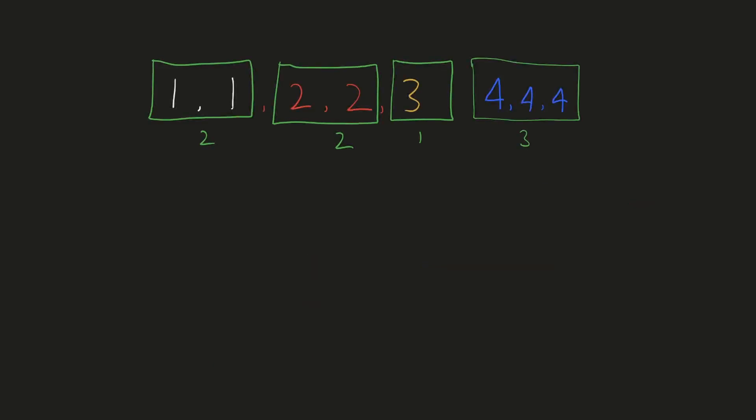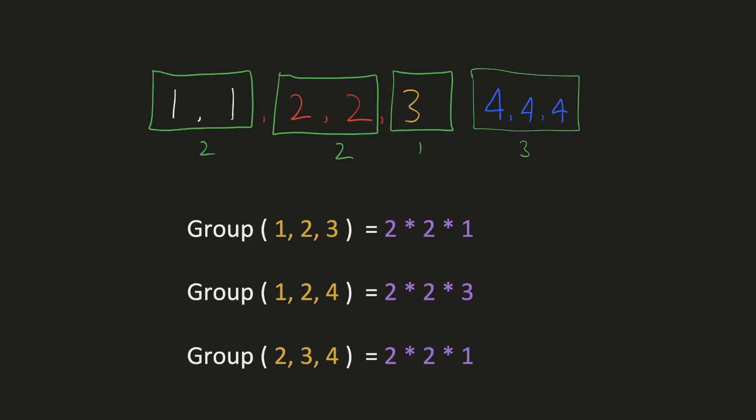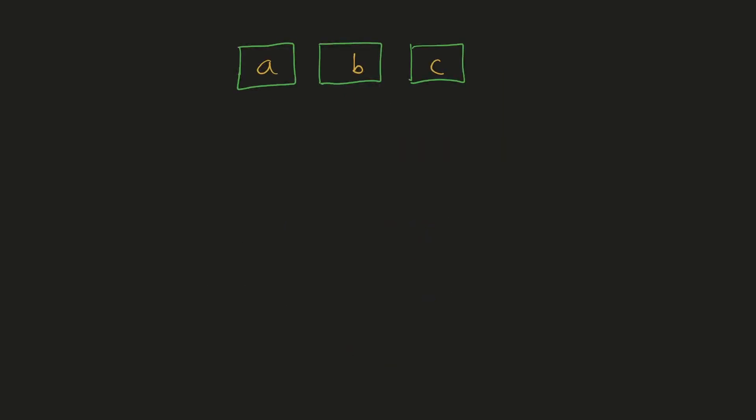Let's look at an example with 4 distinct numbers. Here we can form 3 different triplets: 1-2-3, 1-2-4, and 2-3-4. The count of each triplet can be obtained by multiplying the individual frequencies, and the final answer would be the sum of these three groups. To store the frequency of each number, we can use a hash map. One thing to be careful about is to avoid double counting the same triplet.